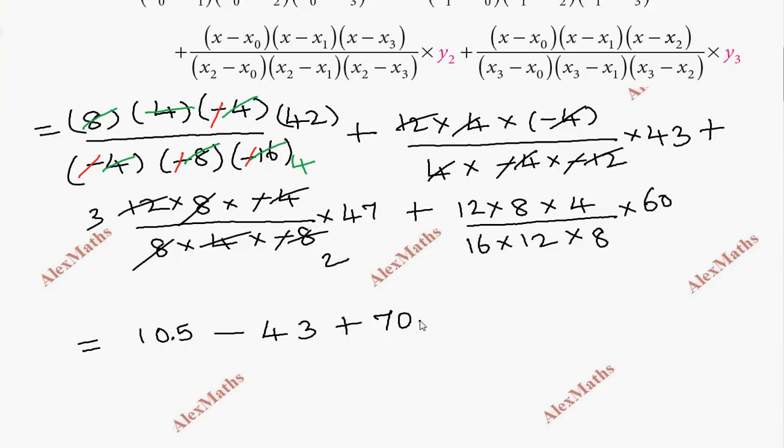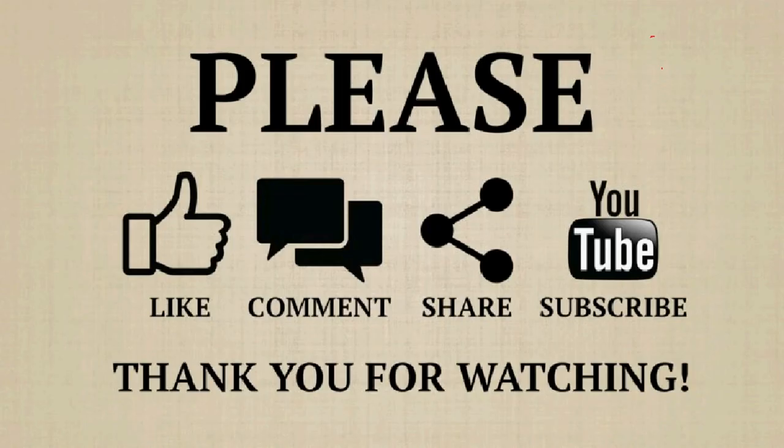For the fourth term, after canceling 8 and 8, cutting the 4, and 12 and 12 cancel, we get 60 divided by 4 equals 15. This is the final value for the fourth term. Adding all terms together: 10.5 plus 43 plus 70.5 plus 15 equals the final answer.